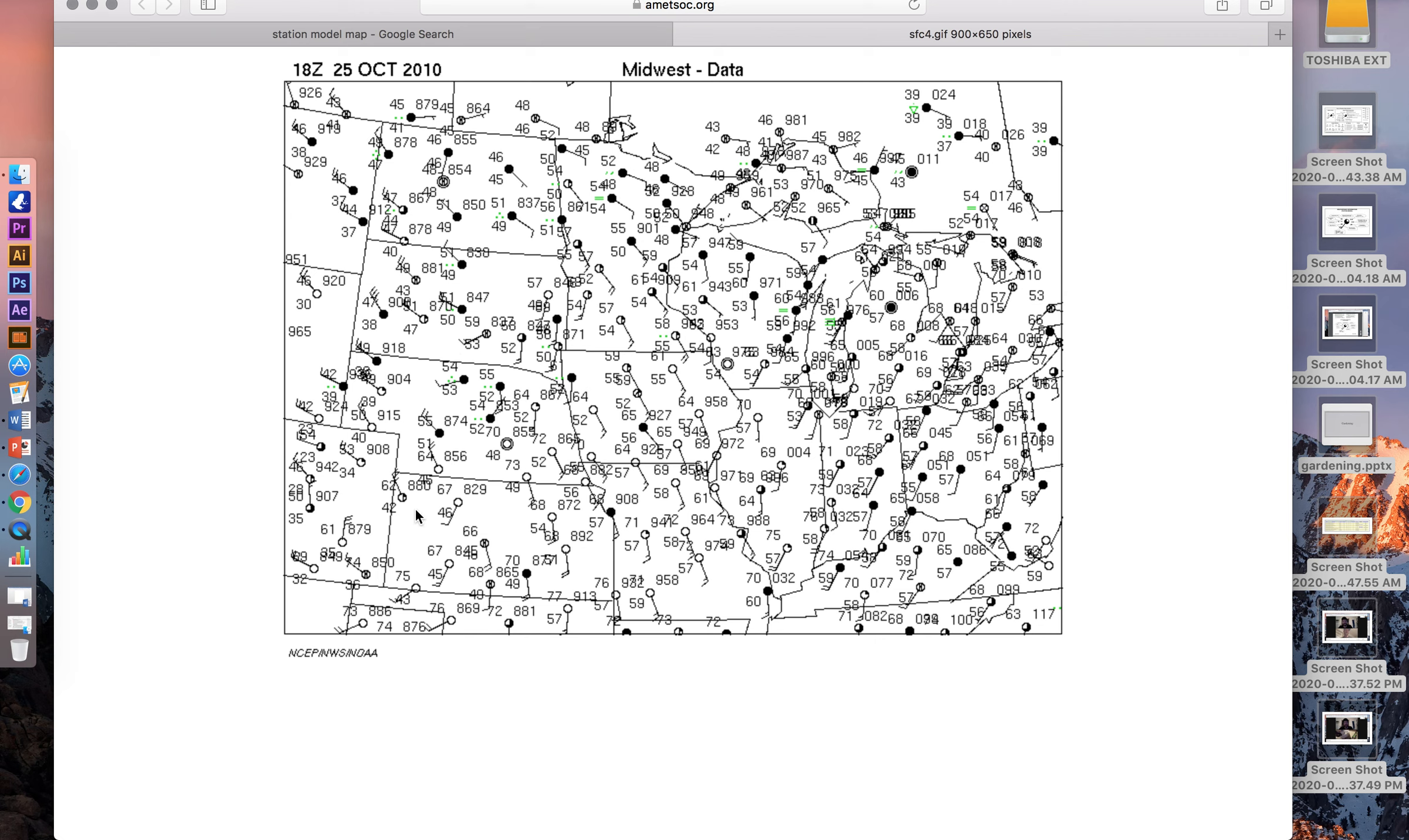So that would probably lead to what we would think to be a low pressure system here—low pressure system. And if we see here 829, that's above 500, so that's 982.9 millibars. Remember, for the 900s that tends to be lower pressure, and if we're in the thousands that tends to be a higher pressure system.